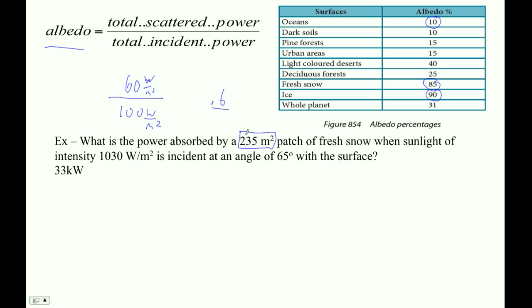Let's look at this thing here. We've got 235 - that's our area. That's how many watts per square meter of fresh snow and sunlight of intensity, whatever, is incident at an angle of 65 degrees. So I think what we're going to do here is, albedo is how much is reflected. So the power absorbed is going to be - what is it going to be? Well, certainly we've got the intensity on there, we've got the area.